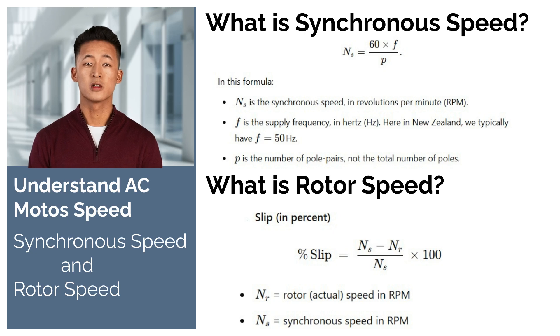In synchronous motors, the rotor locks onto the rotating magnetic field and spins exactly at the synchronous speed. In induction motors, also called asynchronous motors, the rotor always spins slightly slower than the synchronous speed, which is why they are referred to as asynchronous.